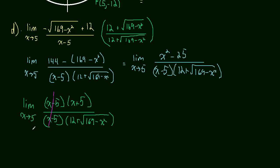Okay. These two divide to 1. And we're ready to plug in 5 for our x's. So let's do that. So this limit will be equal to 5 plus 5, which is 10, divided by 12 plus the square root of 169 minus 25, which is equal to 10 over 12 plus the square root of 144, which is equal to 10 over 12 plus 12, which is equal to 10 over 24. And that can be simplified to 5 over 12.